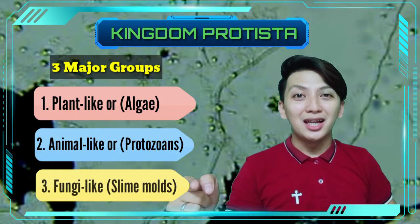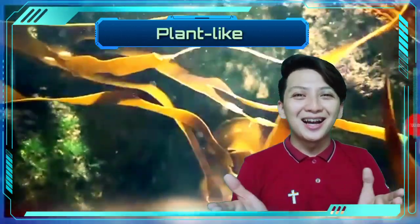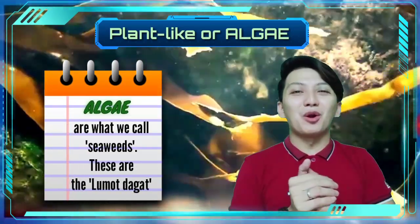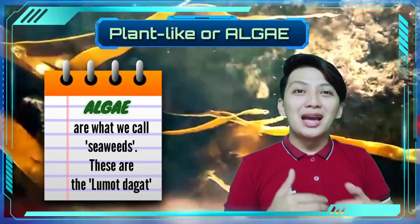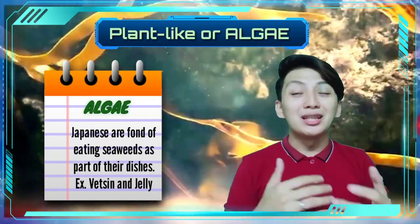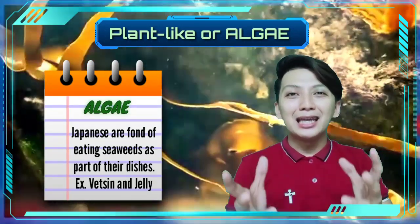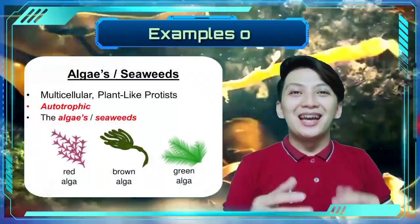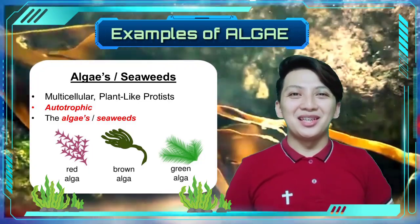Let us first talk about the algal protists — the plant-like protists, or what we call seaweeds. Usually in Japanese foods they eat algae or seaweeds. Those seaweeds are considered as algae. Algae can also be found as what we call lumot in the sea. Here are some examples of these algal protists.